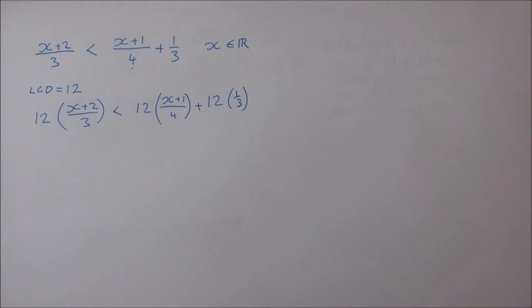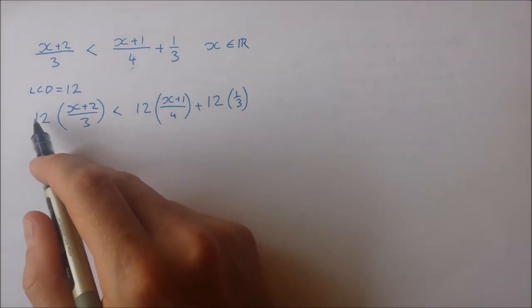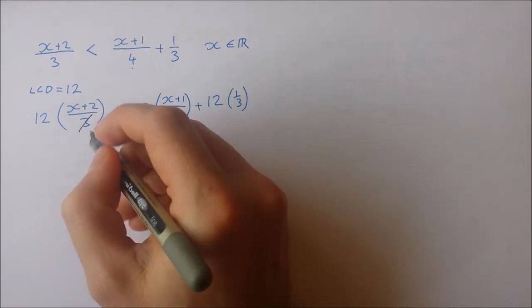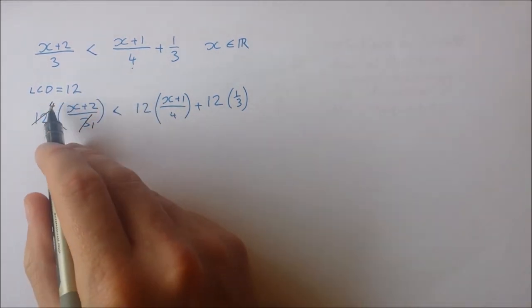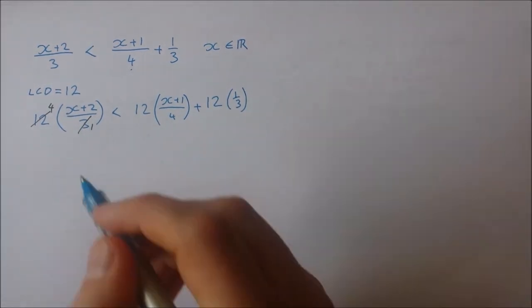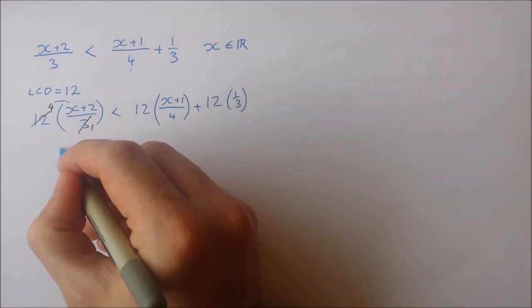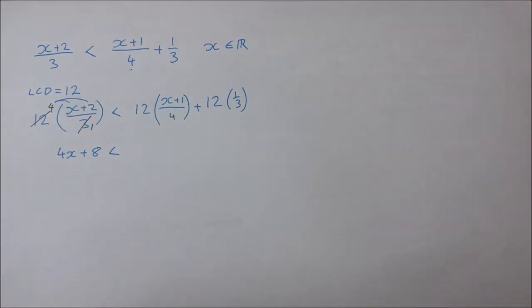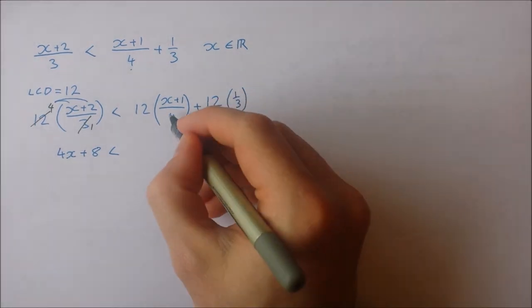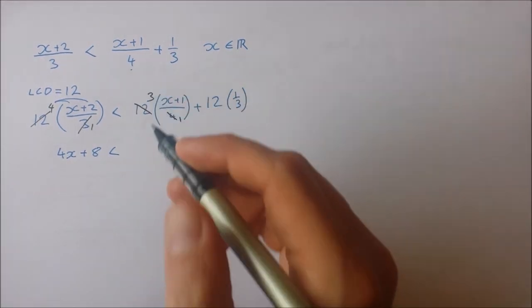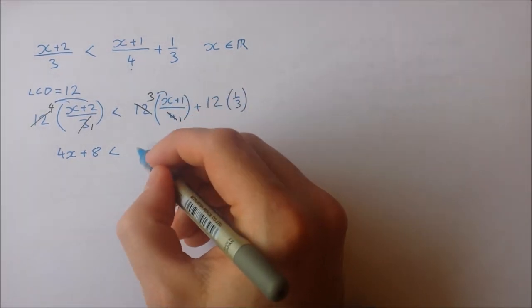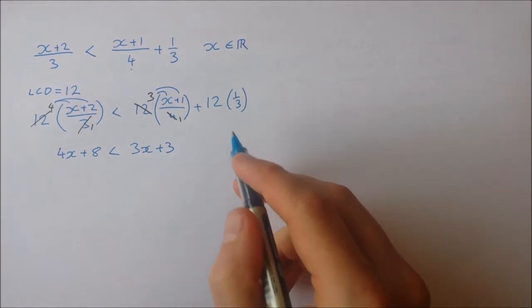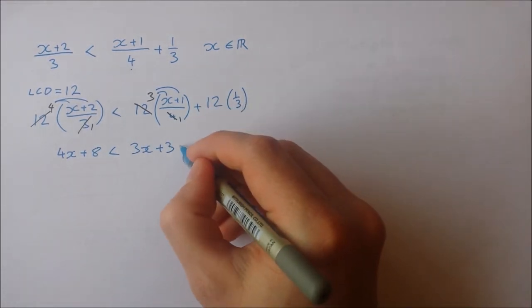Okay, so over here I have 12 and I have a third. So 3 into 3 is 1, 3 into 12 is 4. So that gives me 4 times x plus 2. 4 times x is 4x. 4 times 2 is 8. Over here 4 into 4 is 1, 4 into 12 is 3. So 3 times x is 3x. 3 times 1 is 3. And then here 12 times a third is 4.